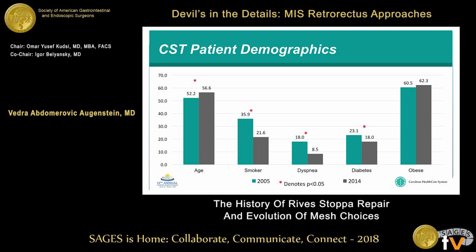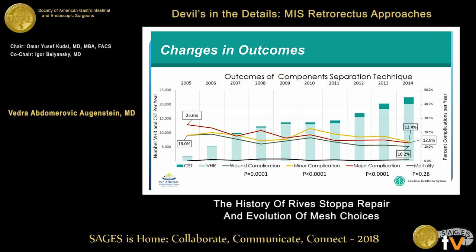Looking at our patients and their comorbidities: they're a little older, we're operating on fewer smokers and fewer diabetics, but they are a little more obese. If you look at all the complications, even with the increase in component separations, wound complications, minor complications, and major complications have all decreased over this time. I think we're definitely doing something right, and these meetings will prove we're figuring out what kinds of meshes and techniques to use to improve.